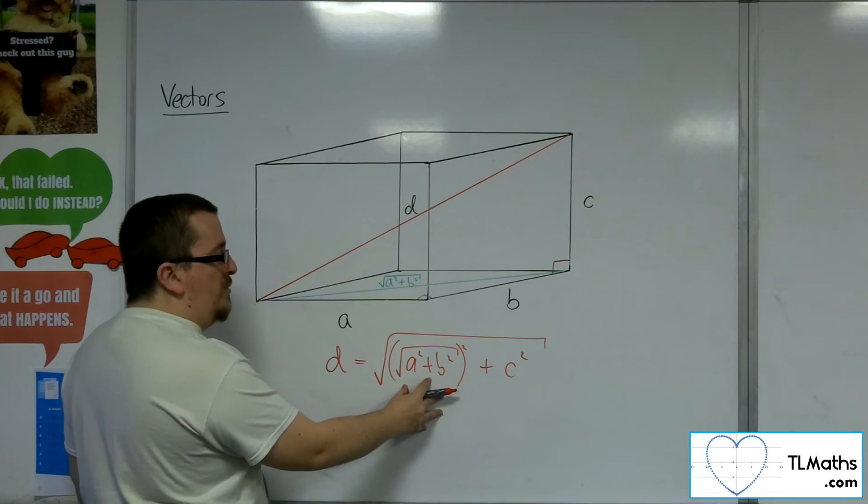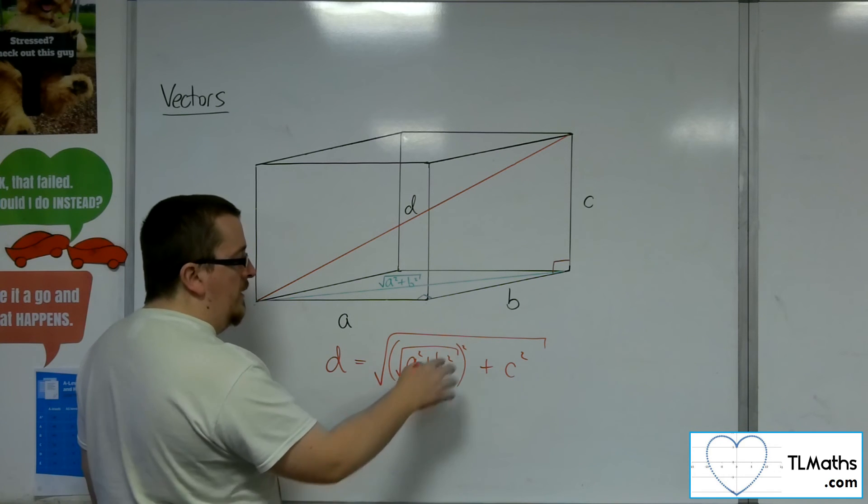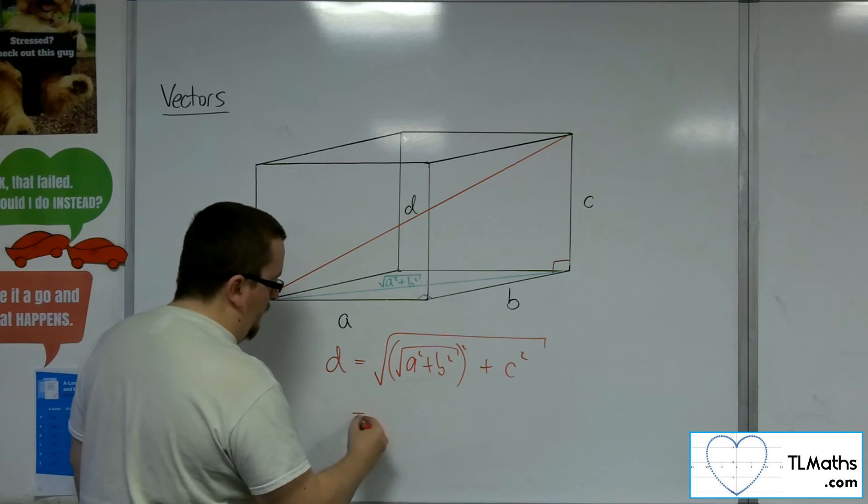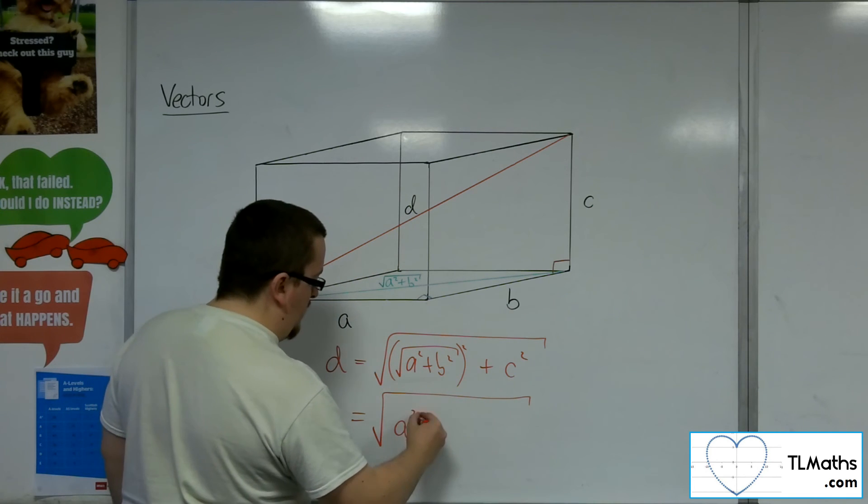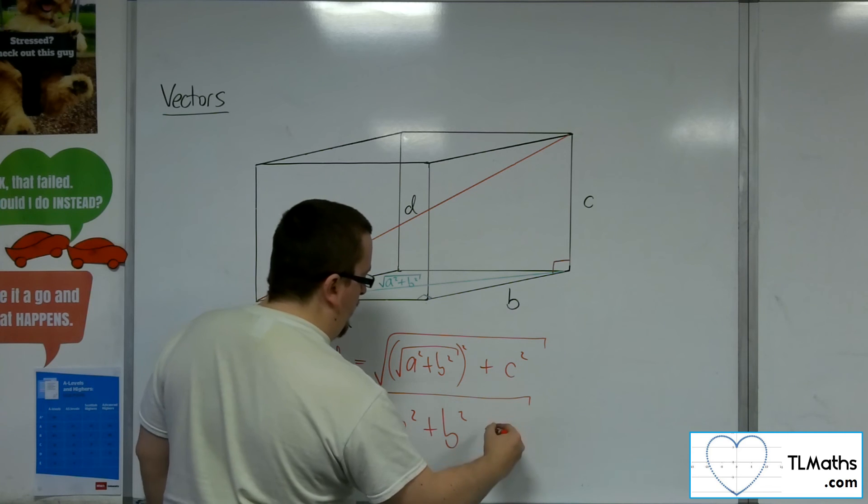But the square root of A squared plus B squared squared, the squared and the square root cancel, and I'd be left with A squared plus B squared plus C squared.